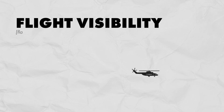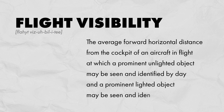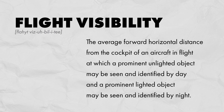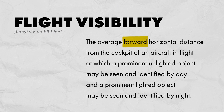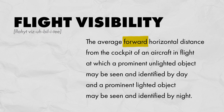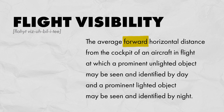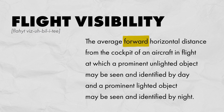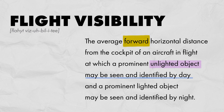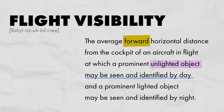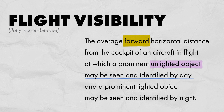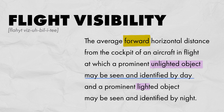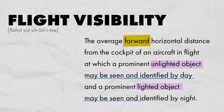By definition, flight visibility is the average forward horizontal distance from the cockpit of an aircraft in flight at which a prominent unlighted object may be seen and identified by day, and a prominent lighted object may be seen and identified by night.